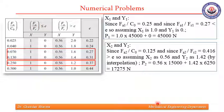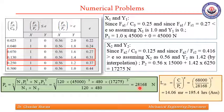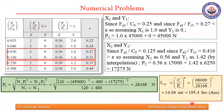By interpolation we found X2 as 0.56 and Y2 as 1.42, giving P2 as 17275 newtons. With X1, Y1, X2, Y2, P1, P2, n1, and n2 all known, we can easily find the equivalent dynamic load Pe, which comes out to be 28168 newtons. Using the load-life relationship since C is already given, we found L10 as 14.06 million revolutions. Converting to hours gives 195.4 hours, which is the required answer.